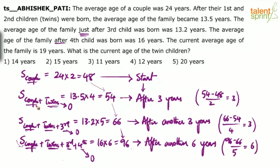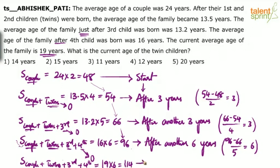The current average age of the family is 19 years. So the sum of the couple plus twins plus third child plus fourth child — this time the fourth child is not 0 — is 19 into 6, which is 114. The increment is 114 minus 96, which is 18, divided by 6 persons, giving 3 years. So this current stage happens after another 3 years.